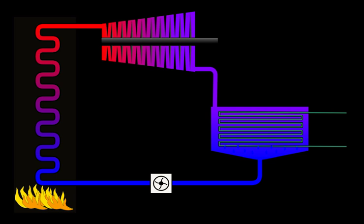Organic Rankine cycle. The organic Rankine cycle uses an organic fluid such as n-pentane or toluene in place of water and steam. This allows use of lower temperature heat sources such as solar ponds, which typically operate at around 70 to 90 degrees Celsius. The efficiency of the cycle is much lower as a result of the lower temperature range, but this can be worthwhile because of the lower cost involved in gathering heat at this lower temperature.